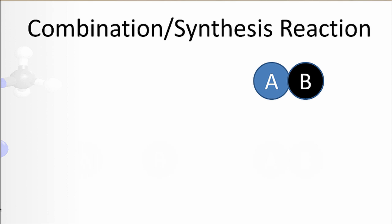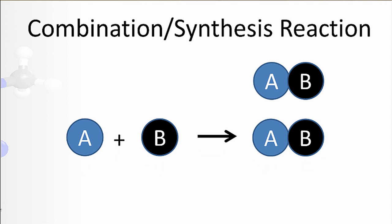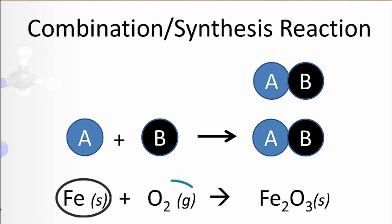If we were to draw the whole reaction out, we'd have something like this: A plus B yields AB. An example would be iron, which is a solid, plus oxygen gas yields iron 3 oxide, which is a solid. Don't worry so much about the S or the G, but you can see the Fe and the O2 come together to form one substance.